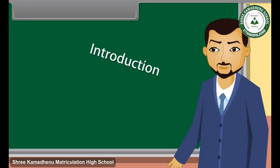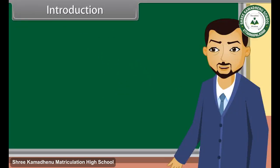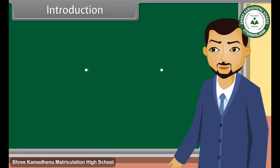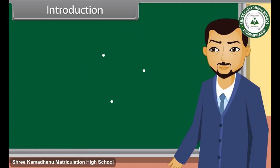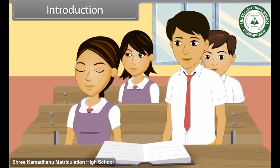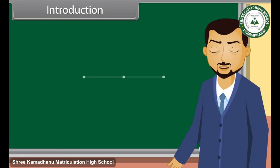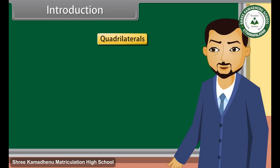Introduction. Students, can you tell what we get when we join two points? A line. Yes, we get a line when we join two points. And what do we get when we join three points? A triangle. Yes, we get a triangle. We also get collinear points. Today we will study about quadrilaterals.